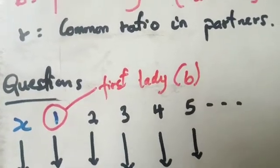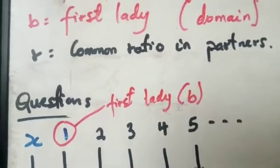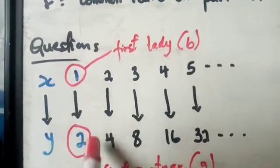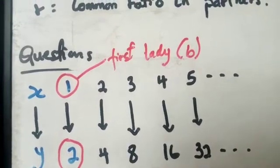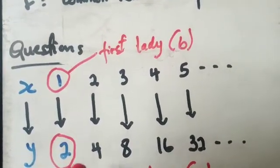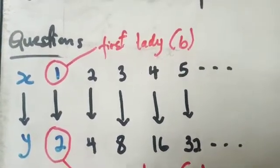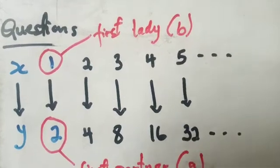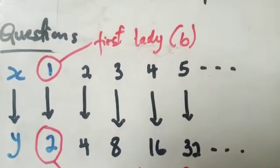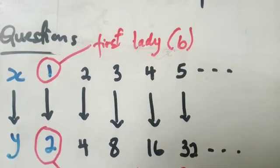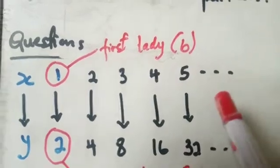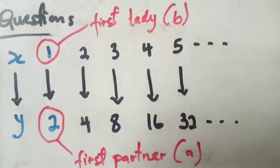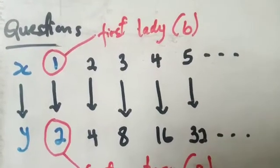Now let's use a past-question example to explain exponential mapping. In this question, X maps to Y where X is 1, 2, 3 and so on, and Y is 2, 4, and so on. The first thing you have to identify is whether this mapping is truly an exponential mapping — just like identifying features that distinguish different types of people.